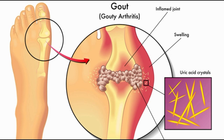Eating foods high in purines can result in the excessive buildup of uric acid in blood, joints, as well as other tissues throughout the body. Since the accumulation of uric acid in joints results in pain, the buildup classifies it as a form of arthritis specifically called gout.